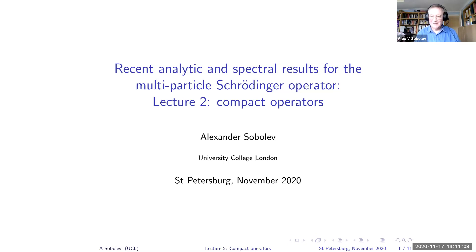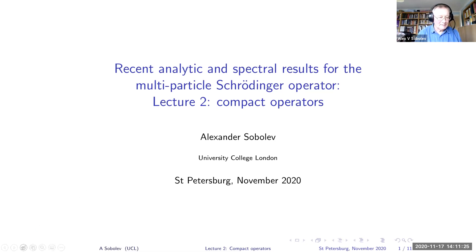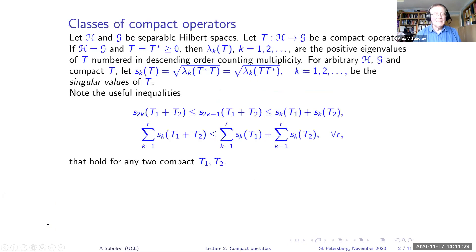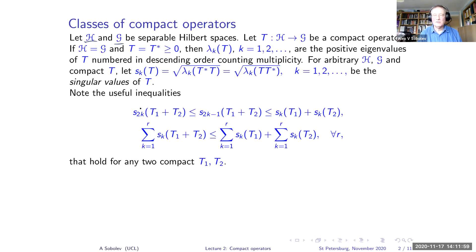This is lecture two, part of the educational portion of this lecture course. I'm going to talk about compact operators and classes of compact operators — dividing compact operators depending on the rate of decay of their eigenvalues or singular values. We start from the beginning, looking at two separable Hilbert spaces, which can be different. We then consider compact operators from one space to the other.